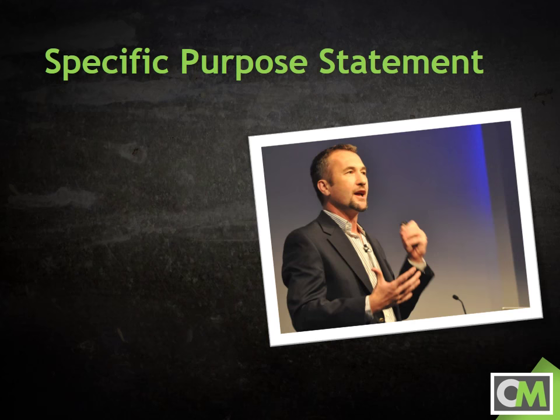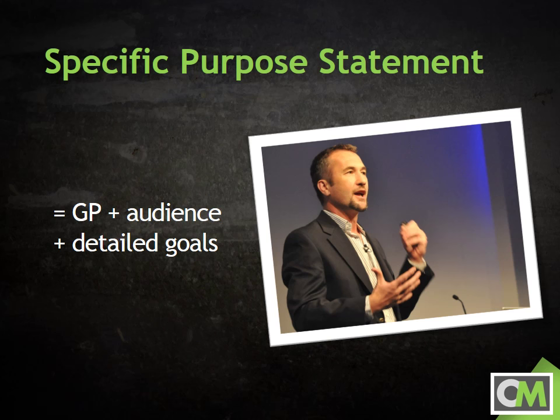In public speaking, a specific purpose statement starts with the general purpose and then provides further detail about the goals of the speech. The basic formula for the specific purpose statement is to restate the general purpose, identify the specific audience for the speech, and then detail what it is you want the audience to learn, do, reconsider, or agree with at the conclusion of the speech.